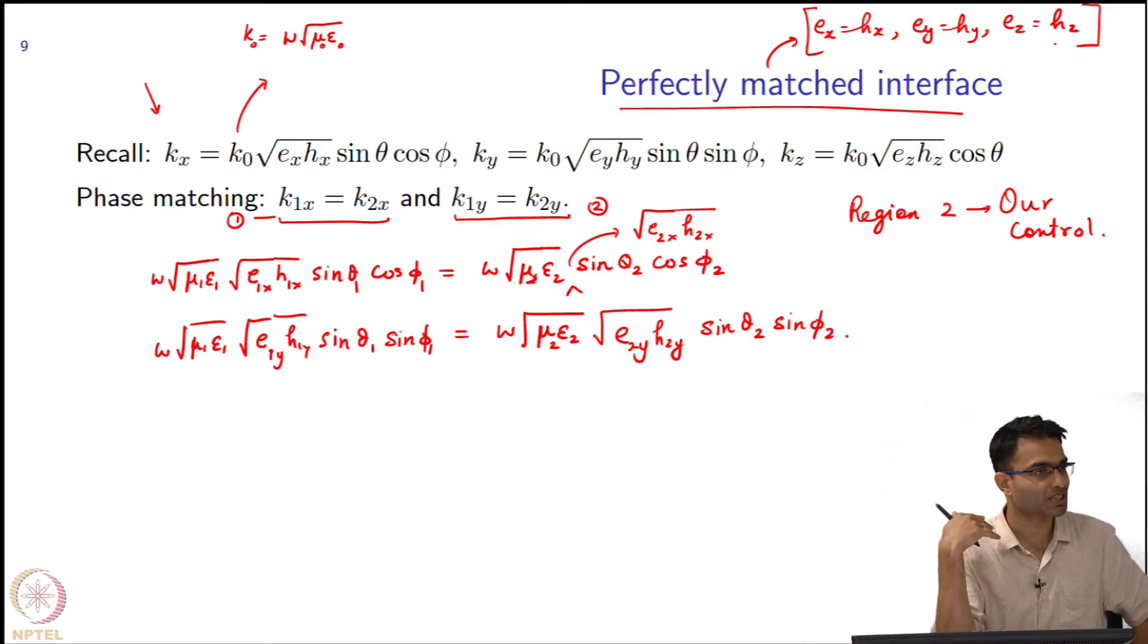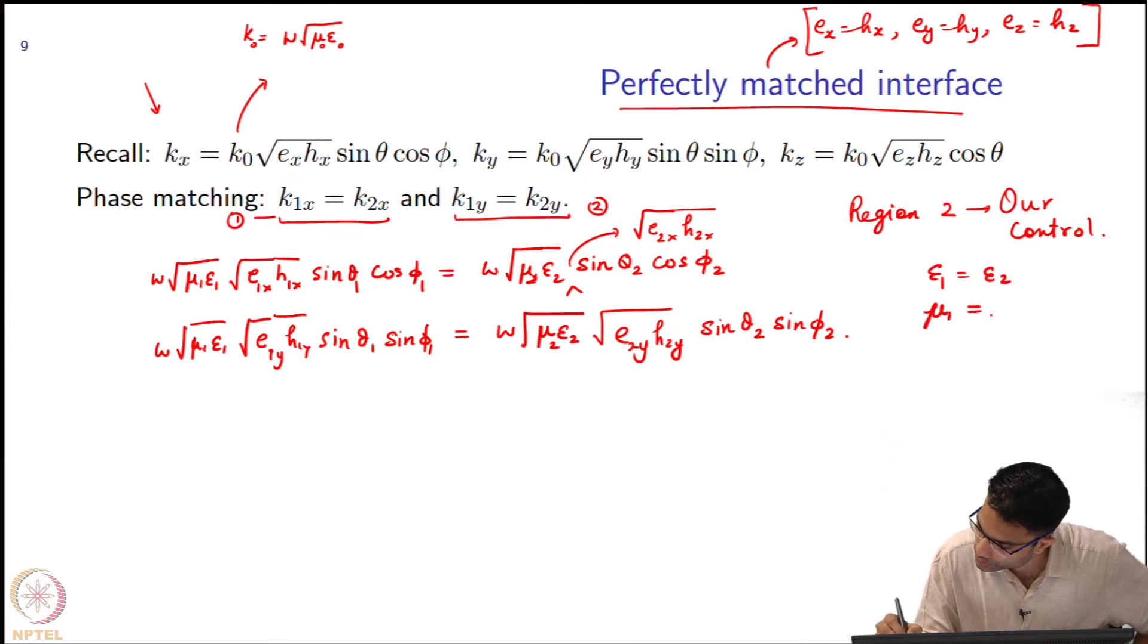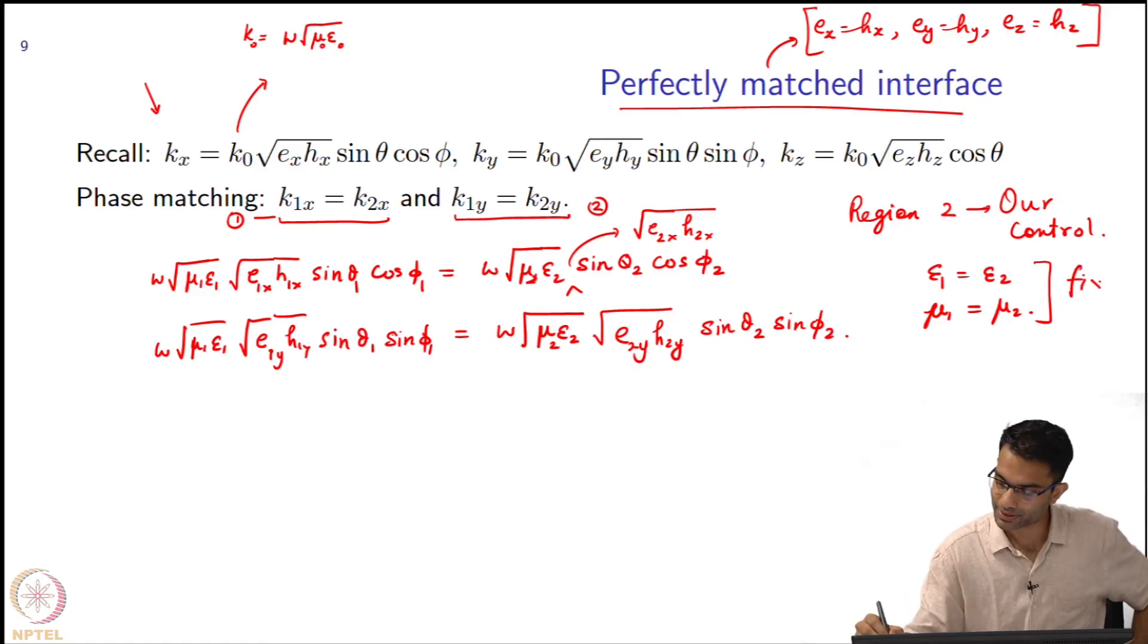So in other words, what is the simplest way to match impedances? Make epsilon_1 equal to epsilon_2, mu_1 equal to mu_2. Let us suppose we do that. So epsilon_1 is equal to epsilon_2, mu_1 is equal to mu_2. So we fix this.